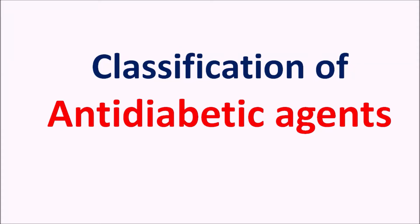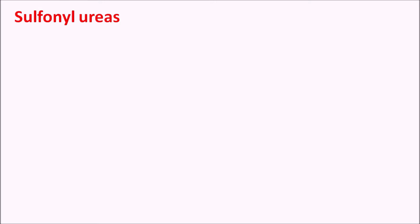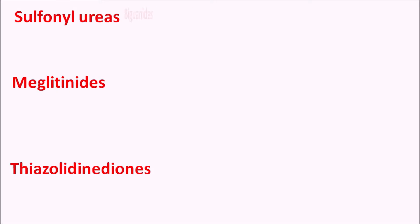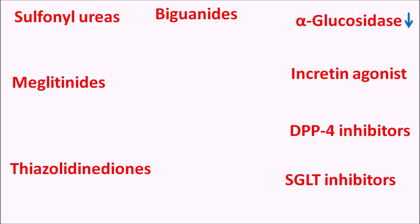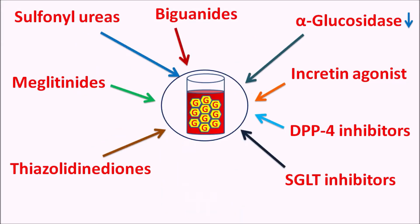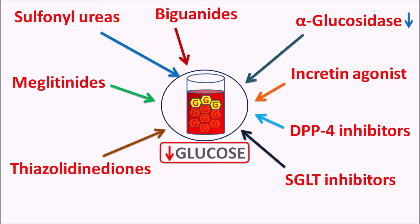Today we are going to discuss the classification of anti-diabetic agents in an easy way. We have many types of anti-diabetic agents, including sulfonylureas, meglitinides, thiazolidinediones, biguanides, alpha-glucosidase inhibitors, incretin agonists, DPP-4 inhibitors, and SGLT inhibitors. Even though these categories are chemically different, their common goal is to reduce blood glucose levels in type 2 diabetes mellitus.